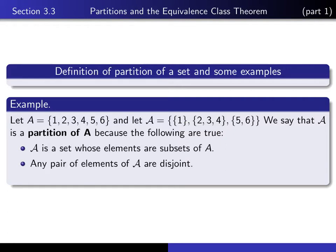Secondly, any pair of the elements here are disjoint — they have no elements in common. Lastly, if you take the union of all of the sets that make up script A, you get back the original set A. So whenever one has such a collection of subsets of a set, we refer to it as a partition of the set.